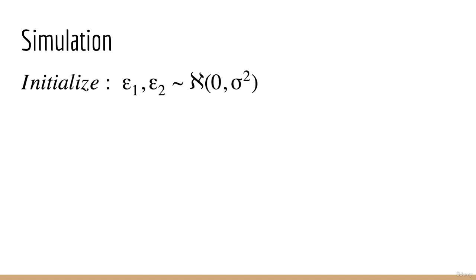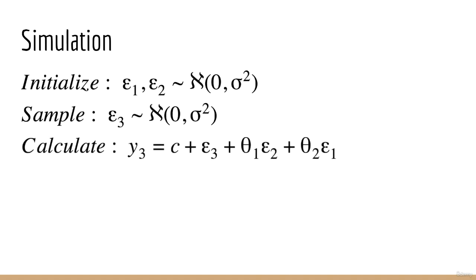First, we need to generate epsilon 1 and epsilon 2. These are just samples from some normal with mean 0 and variance sigma squared. Then we generate epsilon 3. Then we calculate Y3 according to our formula, which depends on epsilon 1, 2, and 3, as well as the model weights, which we assume have been given.